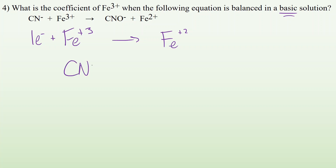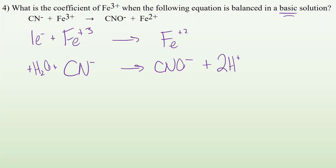Now the CN⁻ → CNO⁻ half-reaction. Balance everything that's not oxygen or hydrogen: one carbon and one nitrogen on both sides. Balance oxygens by adding H₂O: one H₂O needed on the left. Balance hydrogens by adding H⁺: two H⁺ needed on the right. Now balance the charges: left side is minus one; right side has minus one plus two, which is positive one overall, so I need to add two electrons to the left.